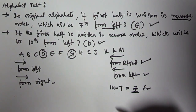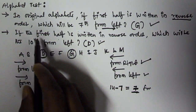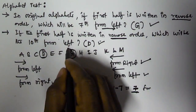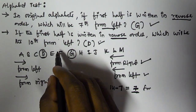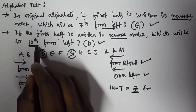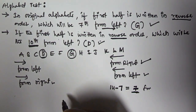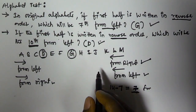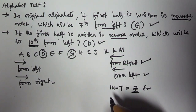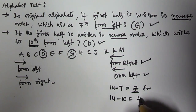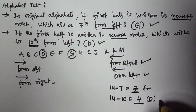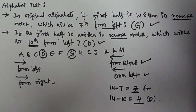For the second problem: if the first half is written in reverse order, reverse means from left becomes from right, so we need the 10th from the right. The first half contains 13 letters, so we subtract from 14: 14 minus 10 equals 4. That means we need the 4th letter from the left, which is D. So the answer is D.